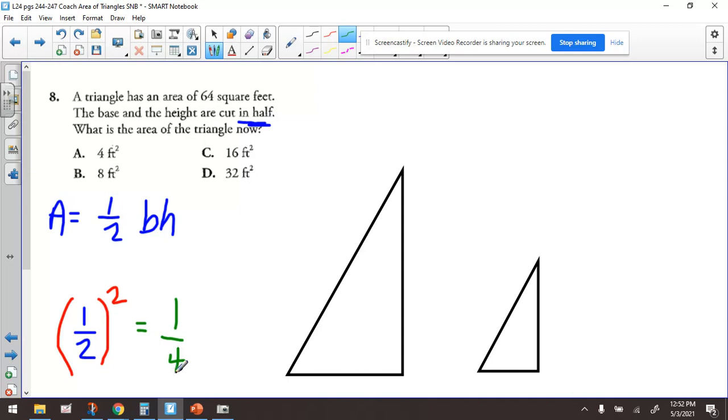Now what does that mean? That means that whatever the area of the bigger one is, if we take one-fourth of that, and that's the entire area, it'll give us the area of the smaller one. So 64, and if we find one-fourth of that, then we're going to get the area of the smaller one.